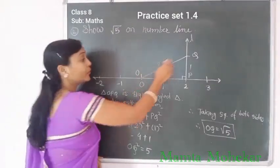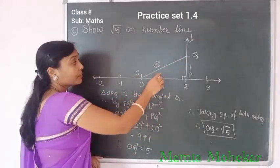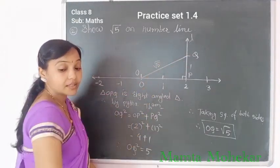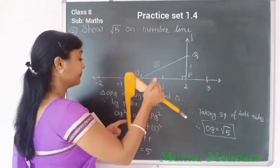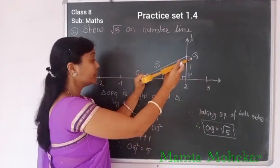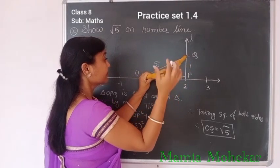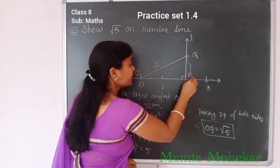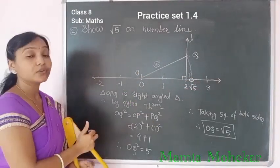Now we know the length of OQ is root 5, measured from O to Q. But we want this point on the number line. So again, take OQ as radius in the compass, and make one arc from the center onto the number line. This point is our root 5. In this way, we show root 5 on the number line.